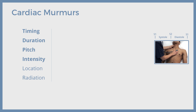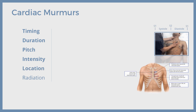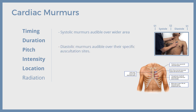Now let's talk about murmurs according to their location. All cardiac auscultatory areas should be auscultated one by one. Systolic murmurs can be audible over a wide area, while diastolic murmurs are only audible over specific affected valve areas. For example, mitral stenosis murmurs are heard over the apex, and aortic regurgitation over the left sternal edge. For systolic murmurs, determine the area where it is loudest.